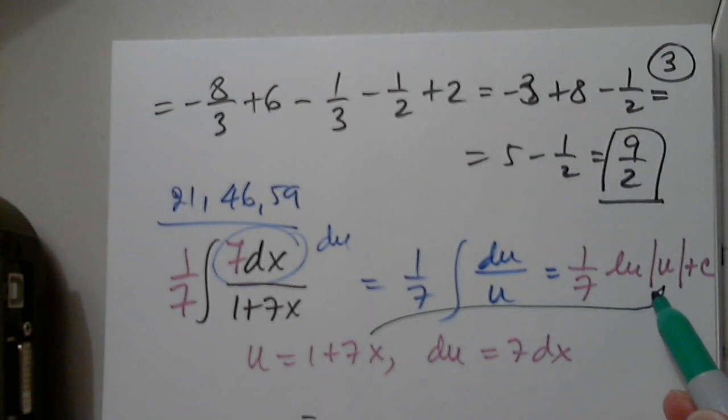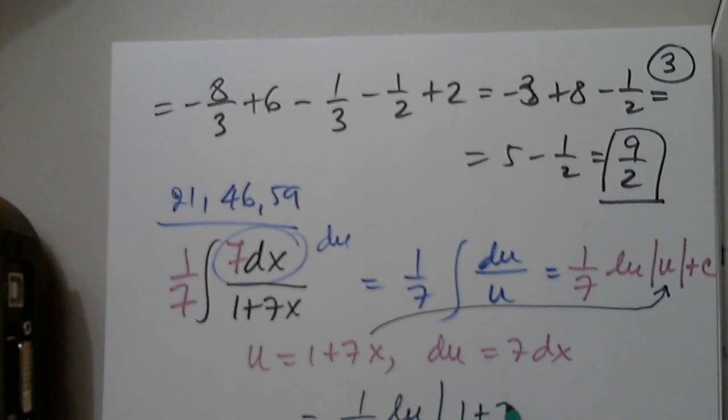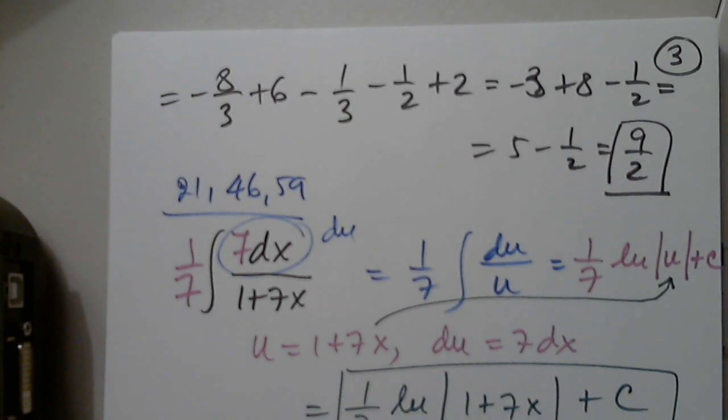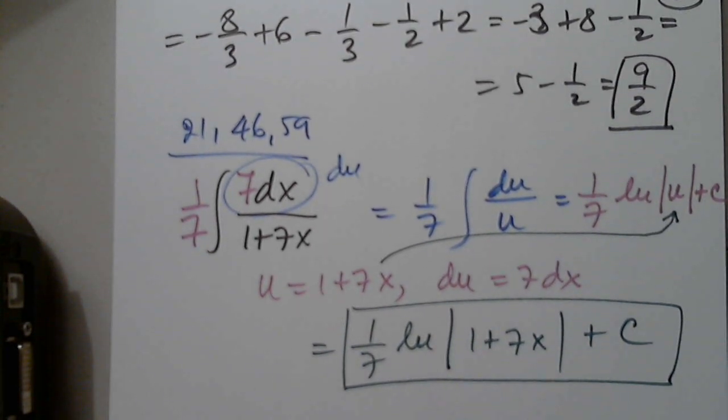So, the final answer will be, and I have to go back and put this in. So, 1 over 7, natural log of the absolute value of 1 plus 7x plus a constant c, and this is finished. Any questions on this problem?